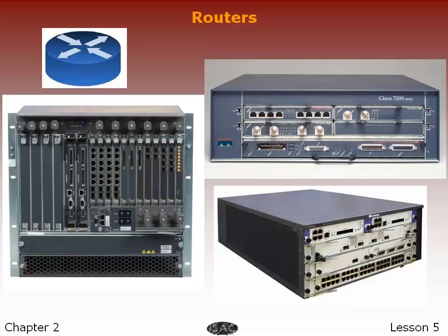Routers intended for internet service provider or ISP and major enterprise connectivity usually exchange routing information using the Border Gateway Protocol or BGP. RFC 4098 standard defines the types of BGP protocol routers according to the router's functions. An edge router, also called the provider edge router, is placed at the edge of the ISP network and uses external BGP, or eBGP protocol, with other service providers or large enterprise autonomous systems.